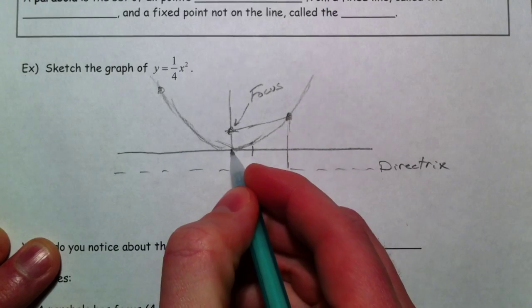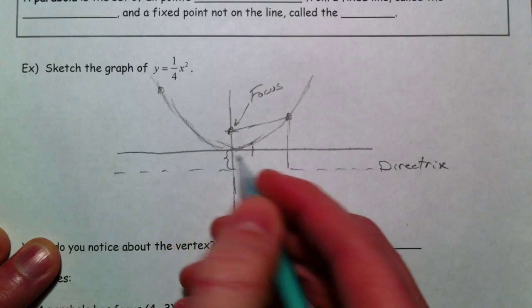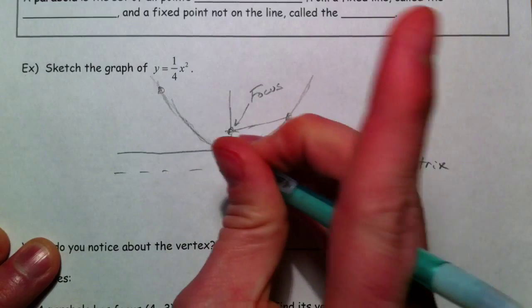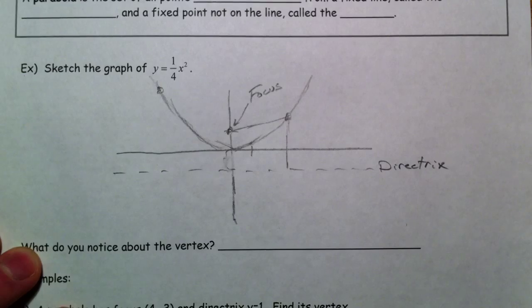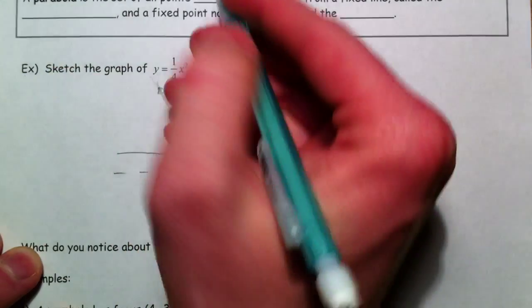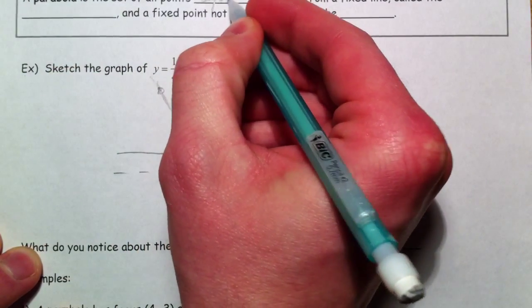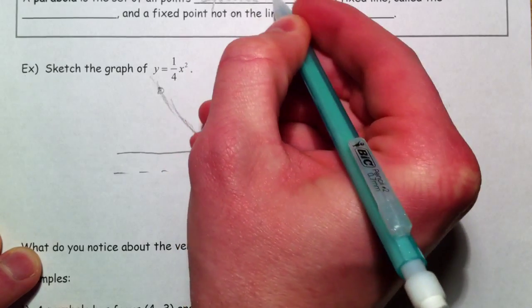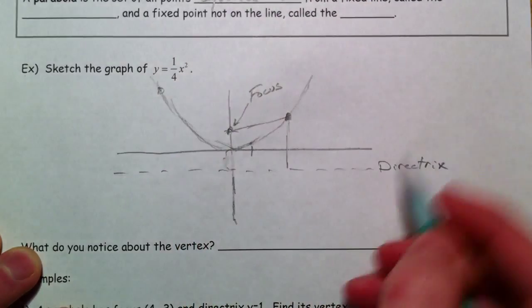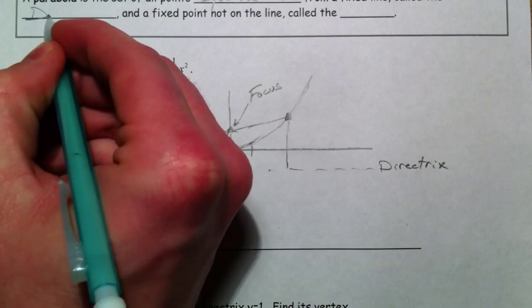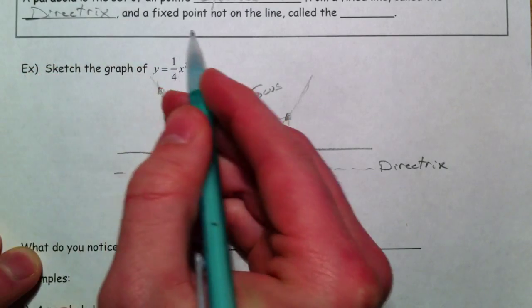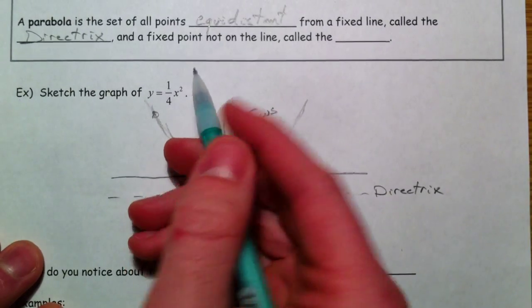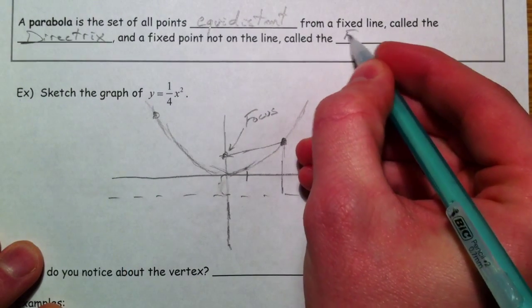And this line is called the directrix. We're going to say that this is about, well, specifically for this one it's 1 away, but we'll come a little bit closer to that. So a parabola is the set of all points equidistant, the same distance, from a fixed line that we call the directrix, and a fixed point on the line called the focus.